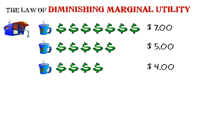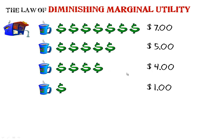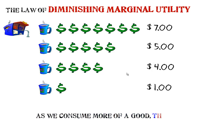I keep going and say I'll have one more, but this time it's only worth $1. At that point I'm going to stop because I've had too many cups of coffee. So the law of diminishing marginal utility states that as we consume more of a good or service, the extra benefit that we gain gets less or reduces.